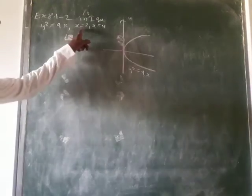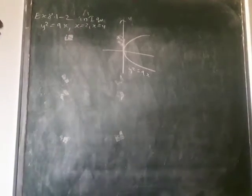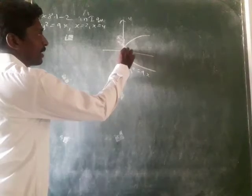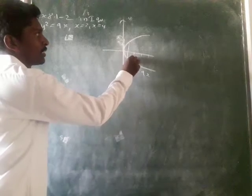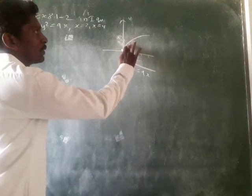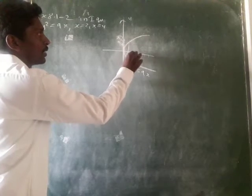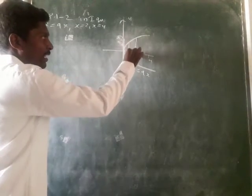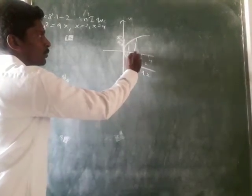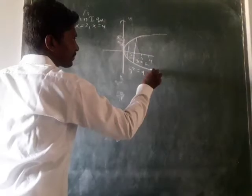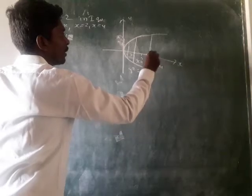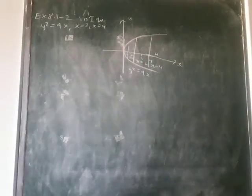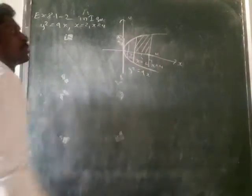They asked to find the area covered from x = 2 to x = 4 in the first quadrant. On the x-axis, mark points 1, 2, 3, 4. Through x = 2 you draw a vertical line, and through x = 4 you draw another vertical line. Since they ask for the area in the first quadrant, that means only the area above the x-axis is required.